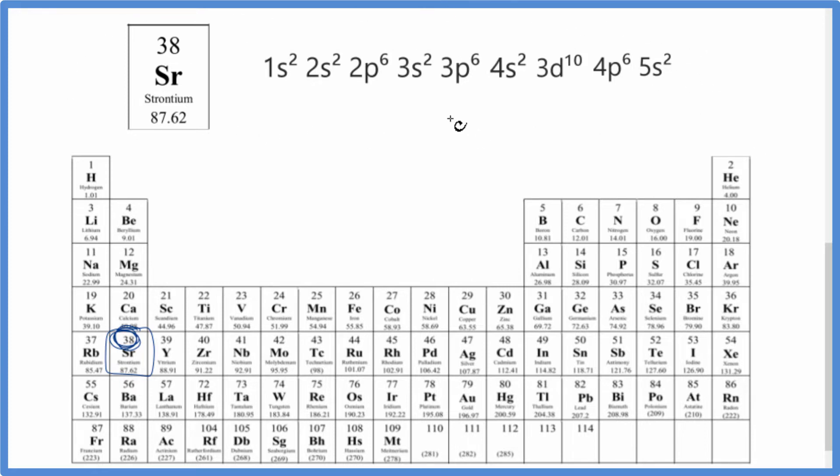So this is neutral strontium. So let's look at how we got the electron configuration for neutral strontium, and then we'll take a look at the ion. So there's two ways to do it.